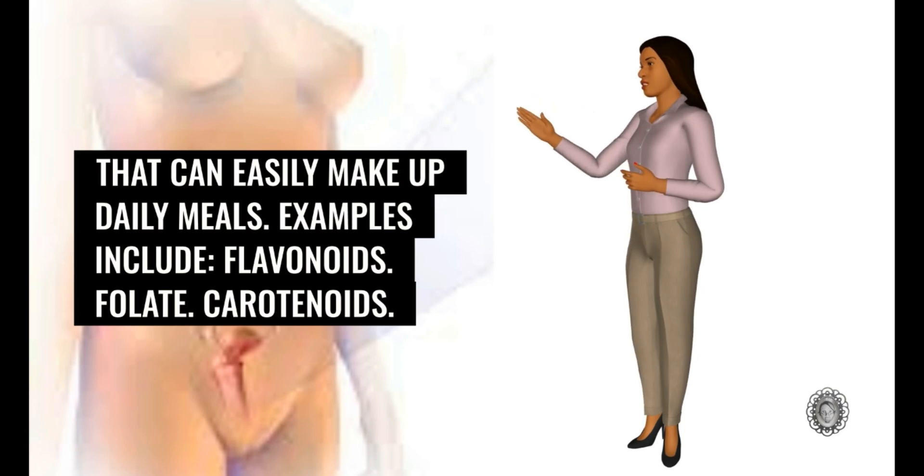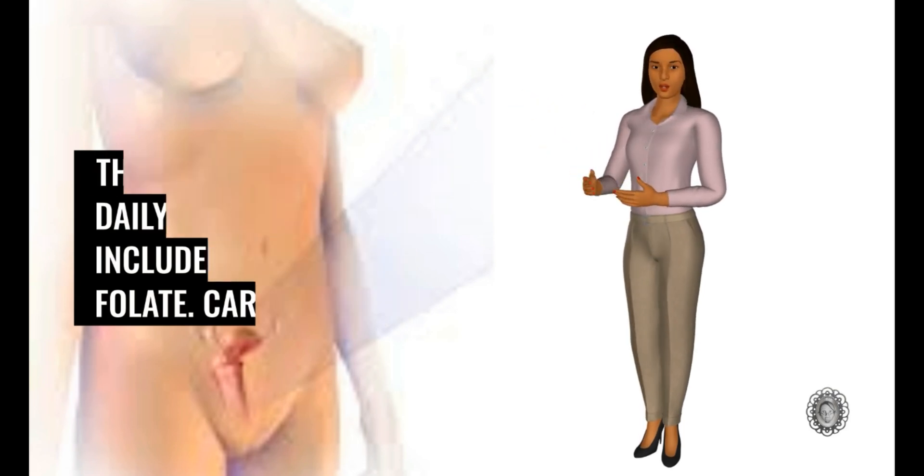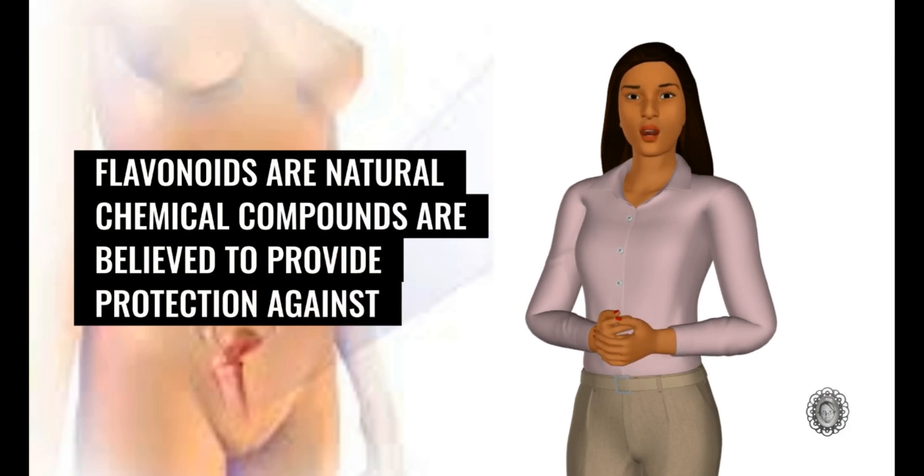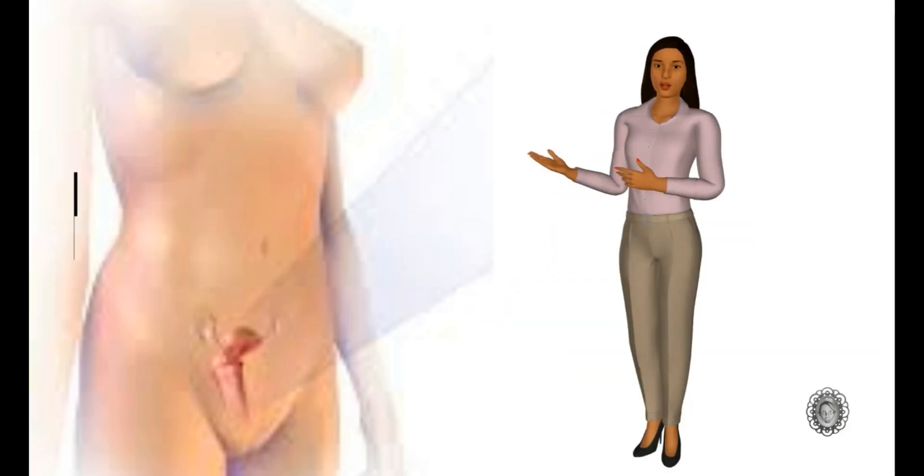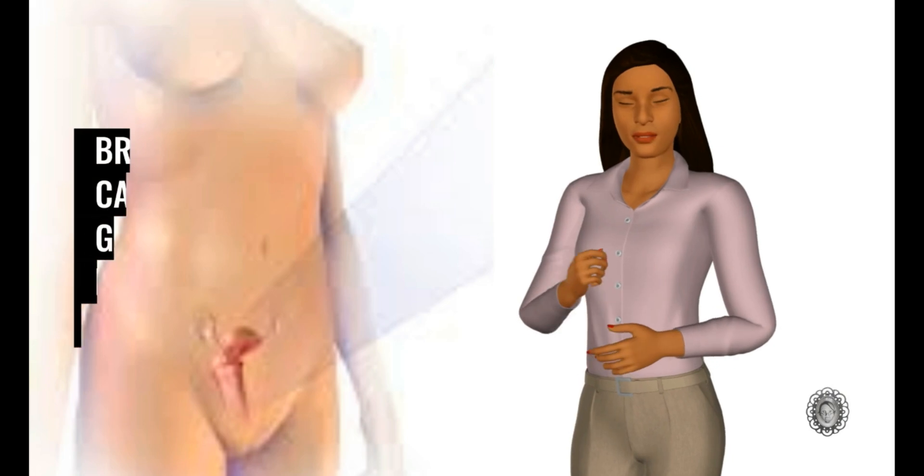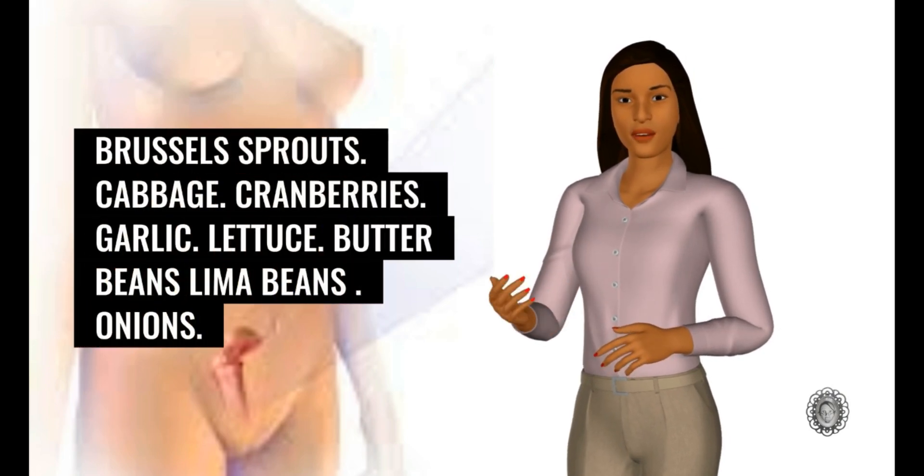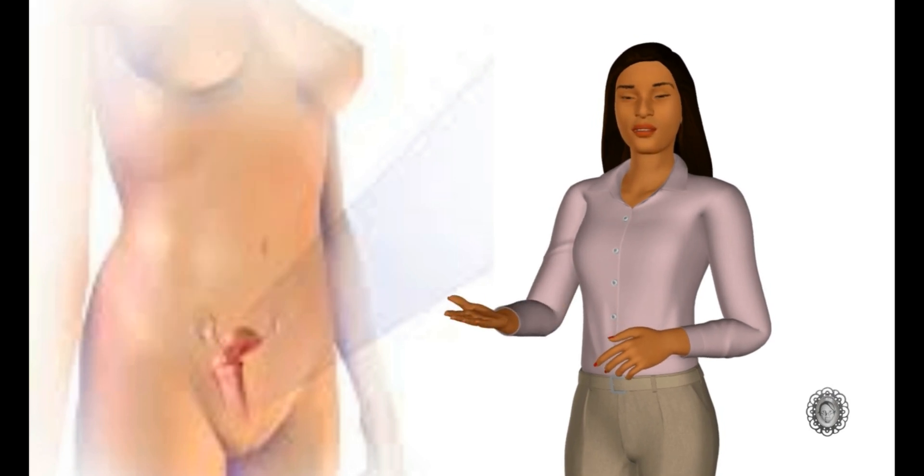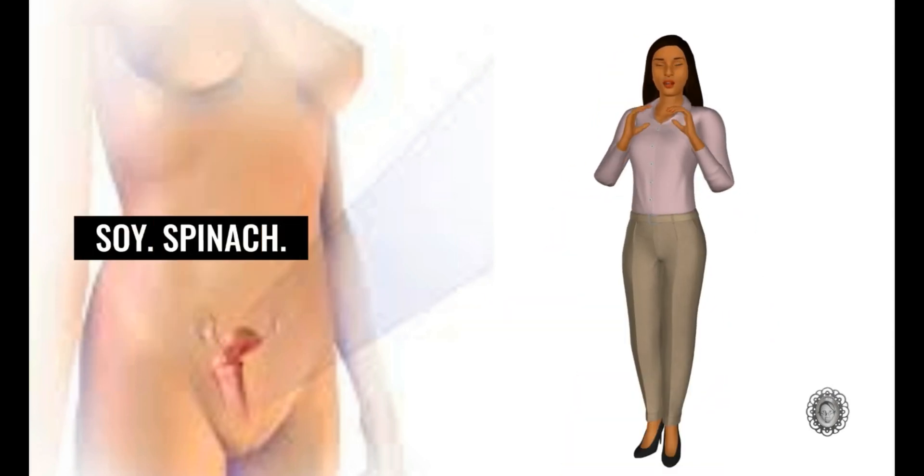Examples include flavonoids, folate, carotenoids. Flavonoids are natural chemical compounds are believed to provide protection against cancer. They are found in apples, asparagus, black beans, broccoli, Brussels sprouts, cabbage, cranberries, garlic, lettuce, butter beans, lima beans, onions, soy, spinach.